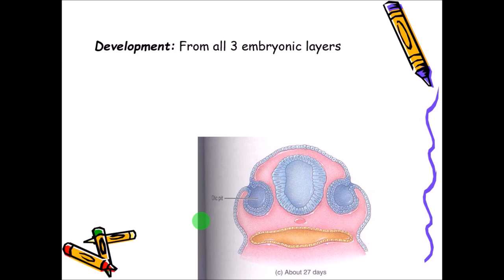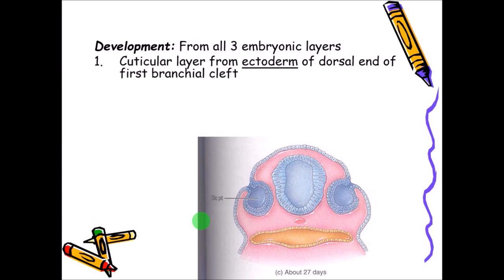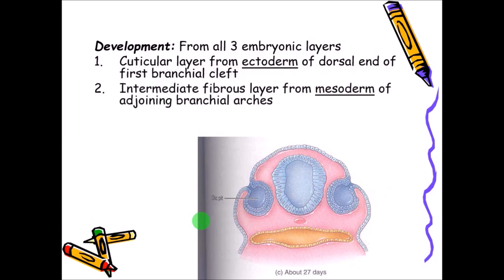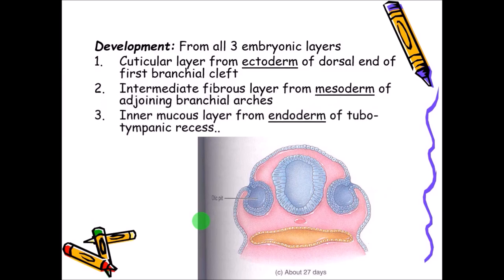The tympanic membrane develops from all three embryonic layers. The cuticular layer develops from the ectoderm of the dorsal end of the first branchial cleft. The intermediate fibrous layer develops from the mesoderm of the adjoining branchial arches. The inner mucosal layer develops from the endoderm of the tubo-tympanic recess. So the ectoderm, mesoderm, and endoderm all come together in the tympanic membrane.